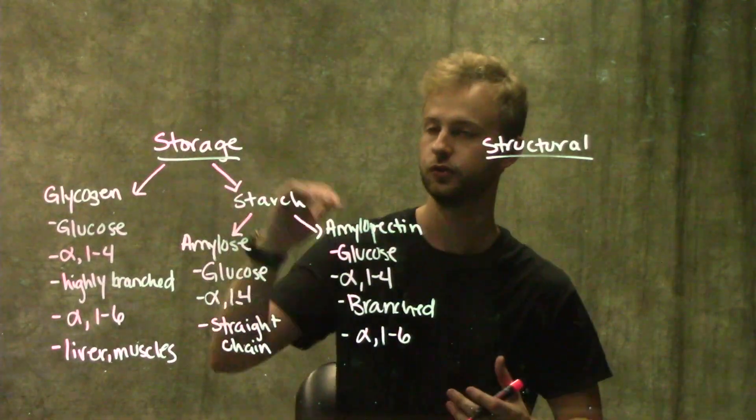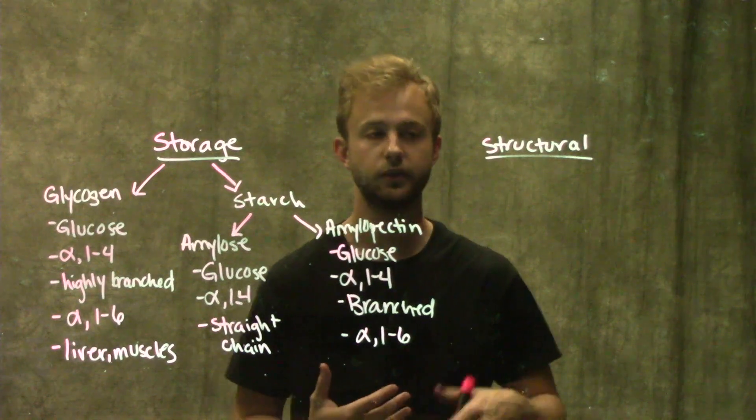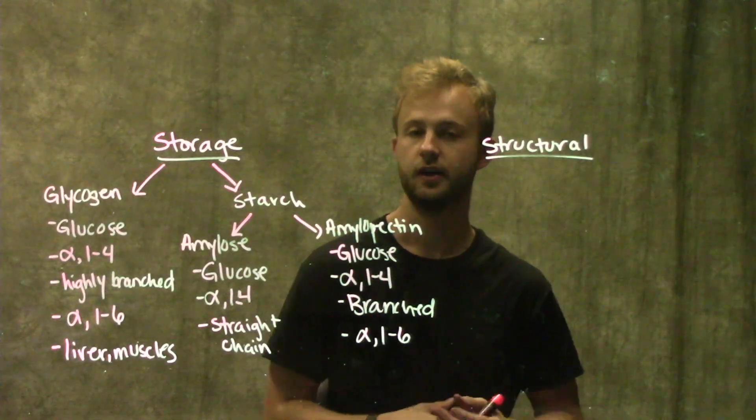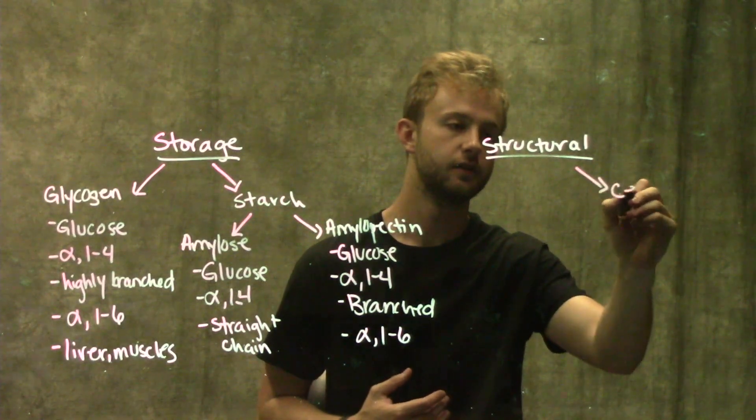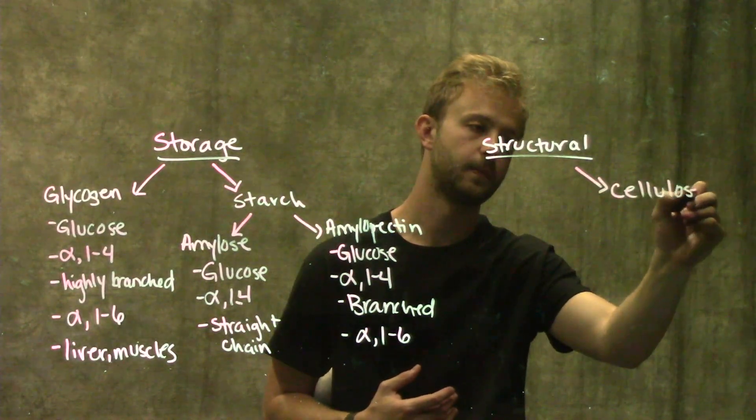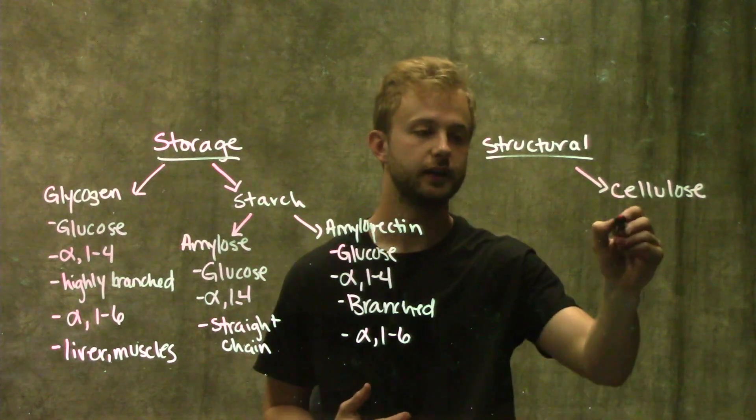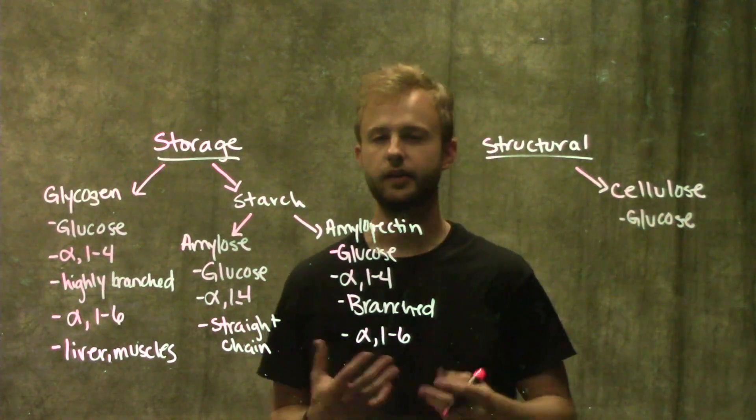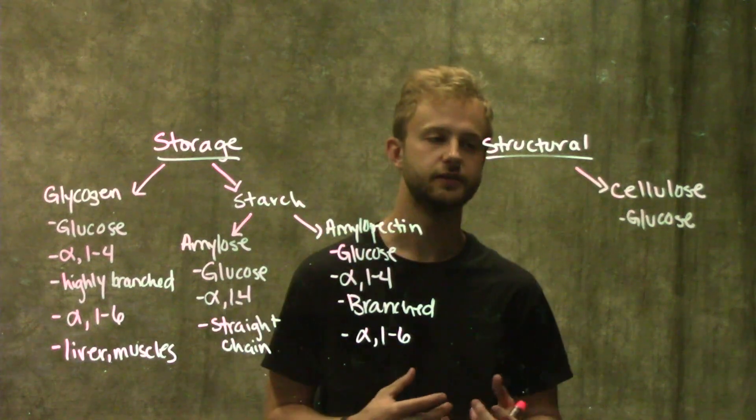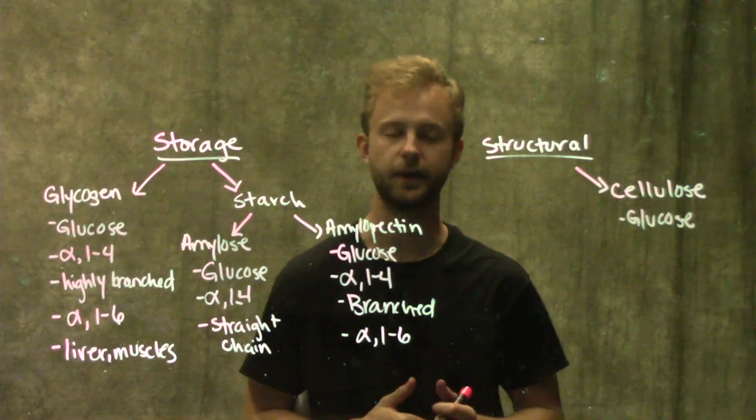Now that we know what storage polysaccharides do, we can look at structural polysaccharides. The most common structural polysaccharide is cellulose. Cellulose is made of glucose, but the interesting thing is that these glucose molecules are arranged in a really unique way.